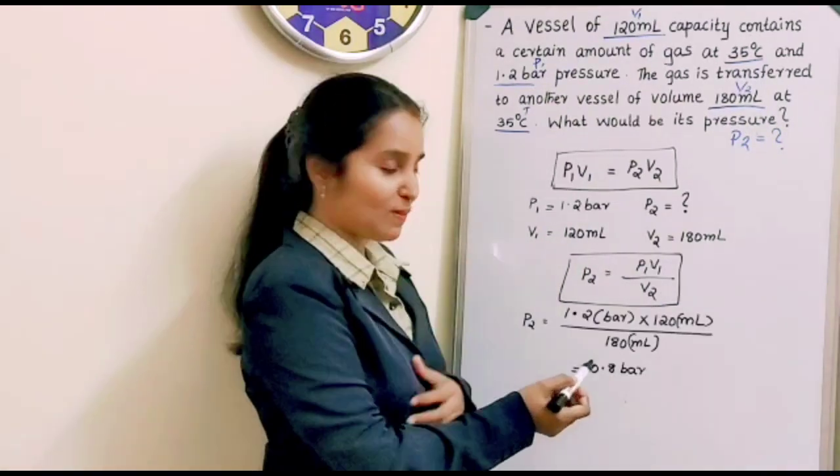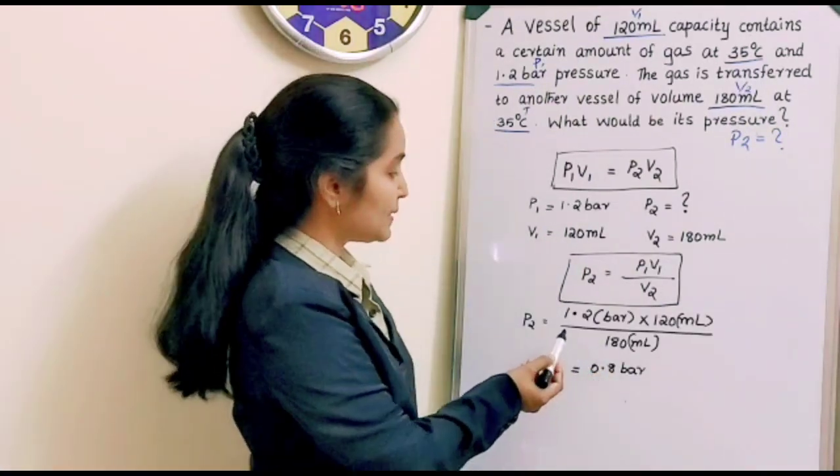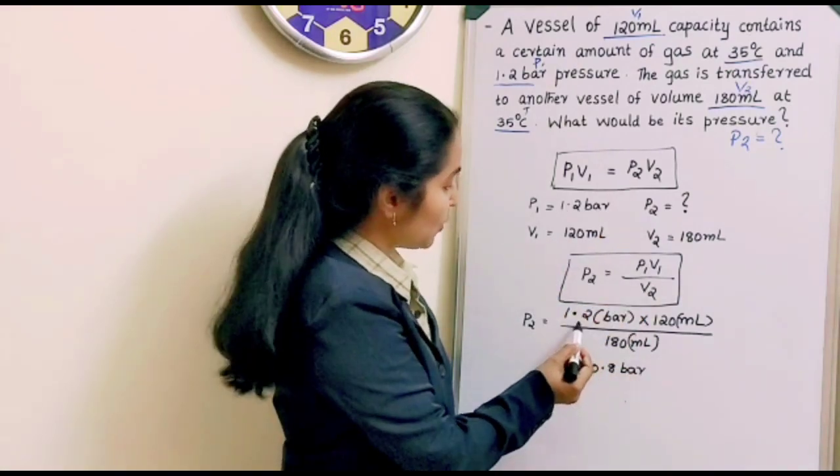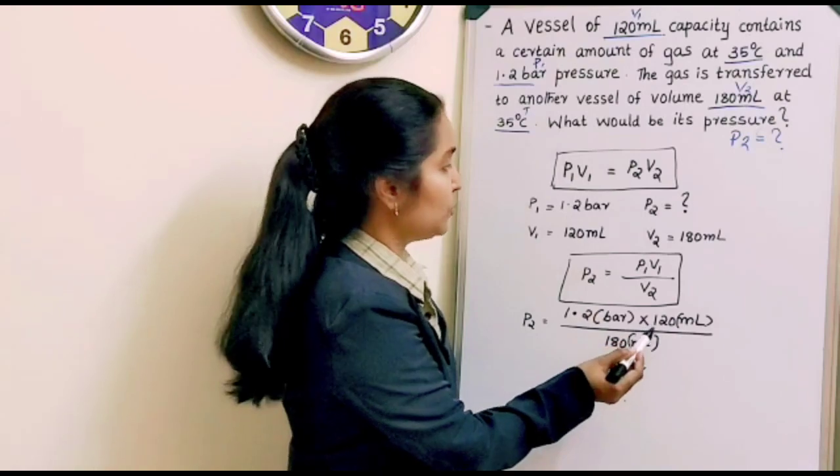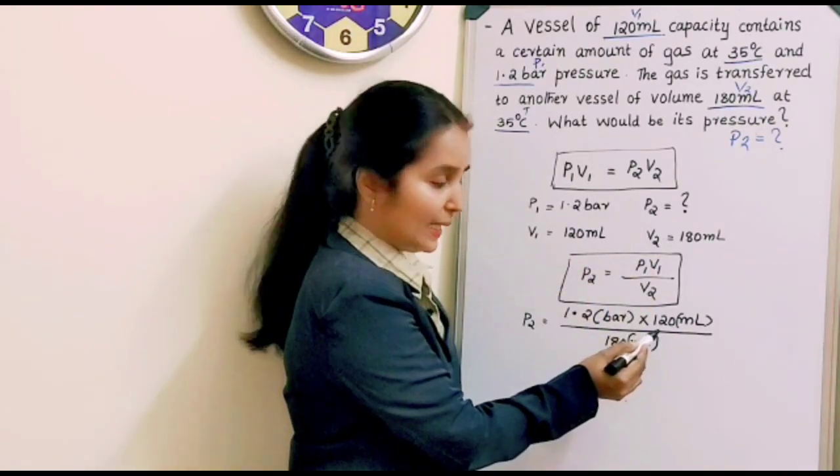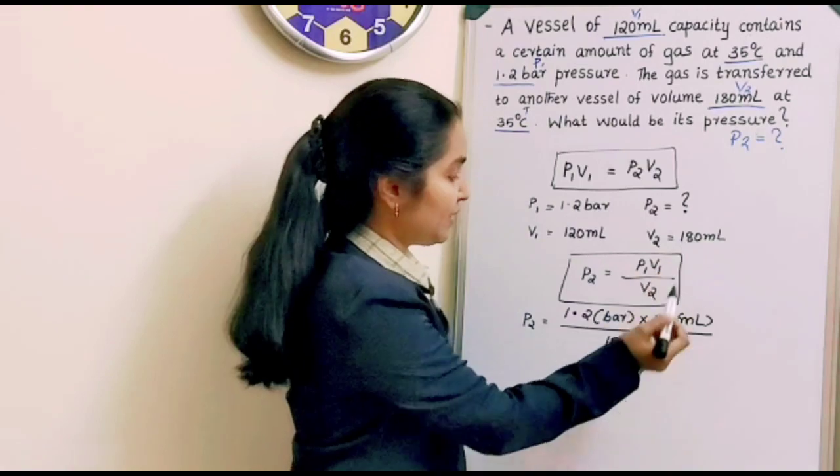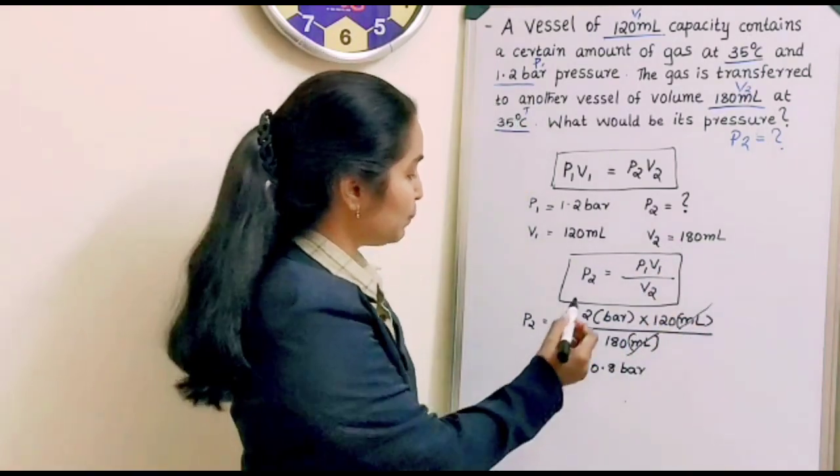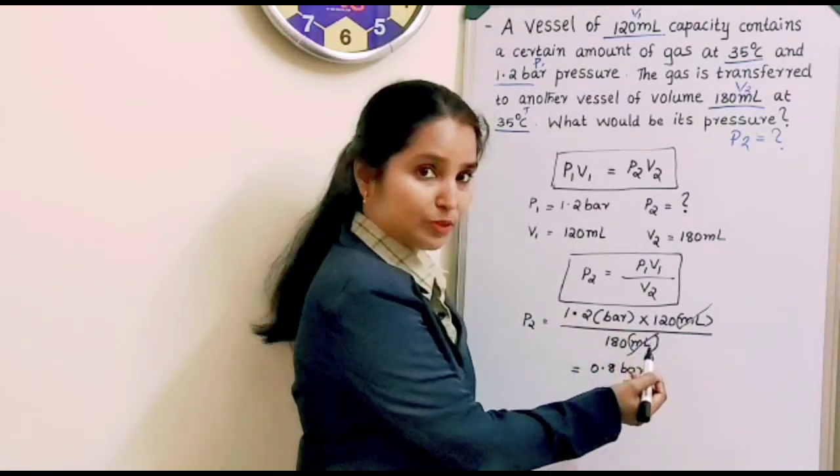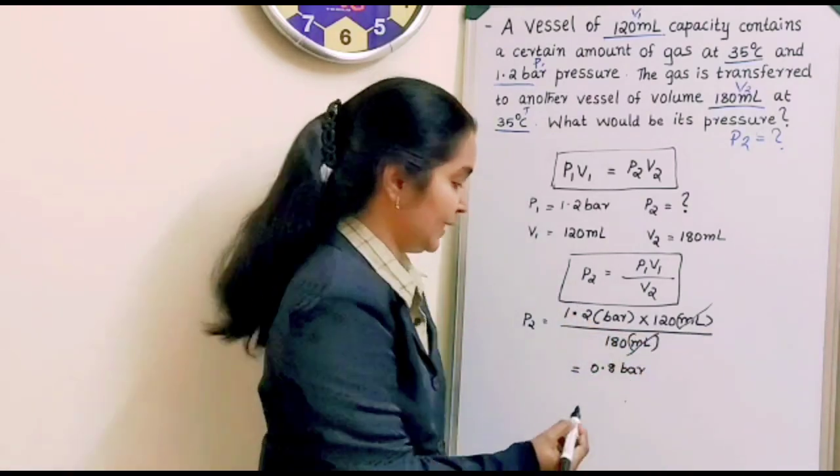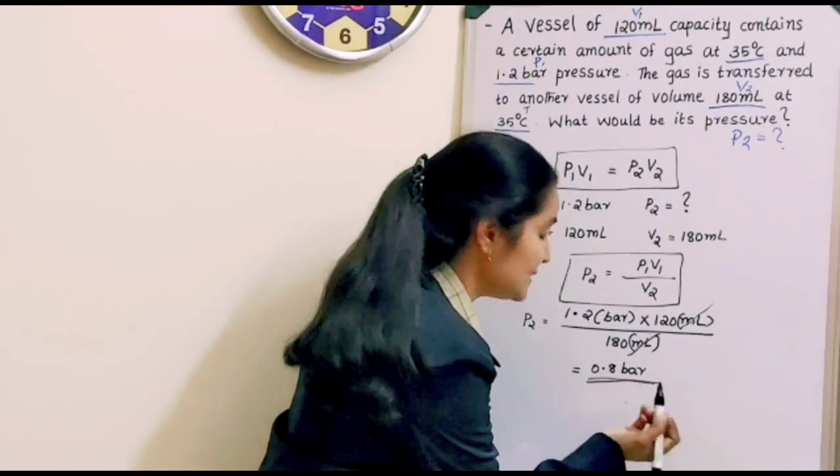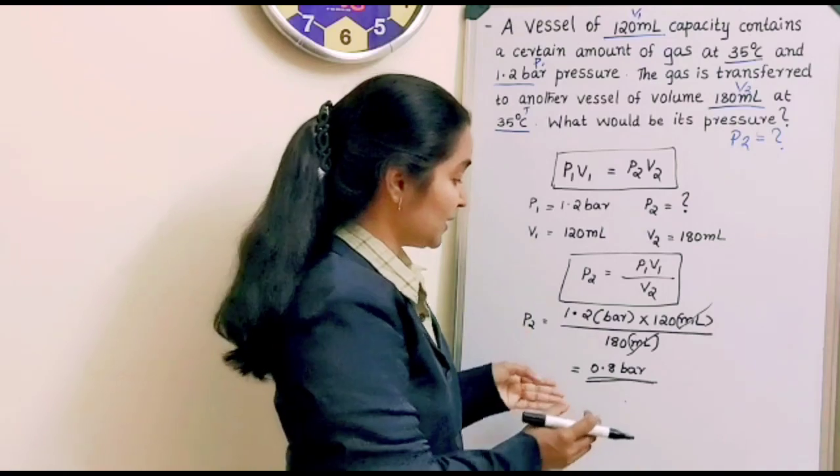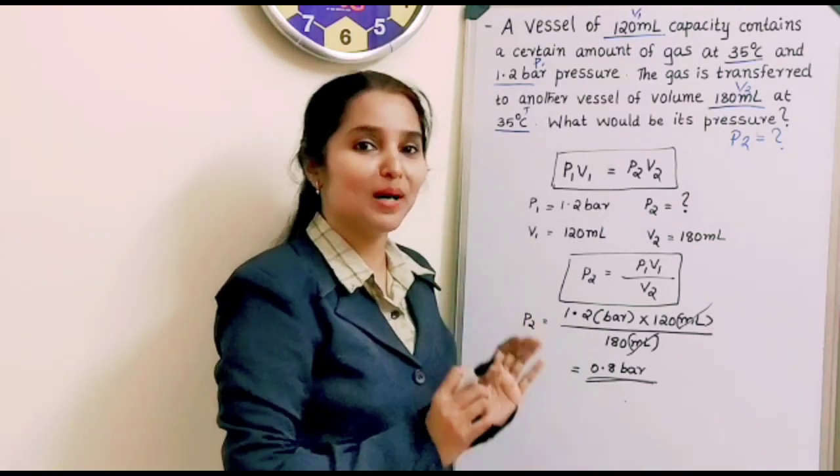So we have applied those values into this equation. You can see here P1V1 divided by V2. Right? So 1.2 bar into V1, 120 ml divided by 180 ml. So this ml and this ml will be cut away. Okay? So 1.2 bar into 120 ml divided by 180 ml. You will get the answer 0.8 bar. So what would be its final pressure P2? That is 0.8 bar. It is easy. Right?